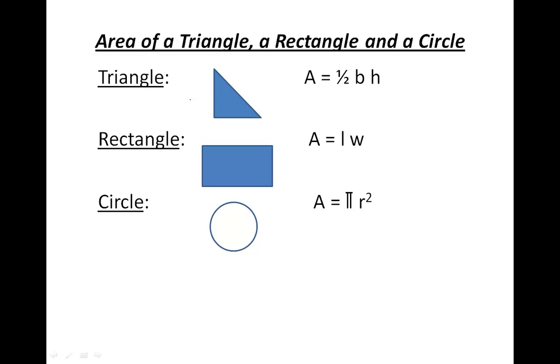Area of a triangle, a rectangle, and a circle can be calculated as follows. For a right angle triangle, the equation is area equals one half the base times the height.